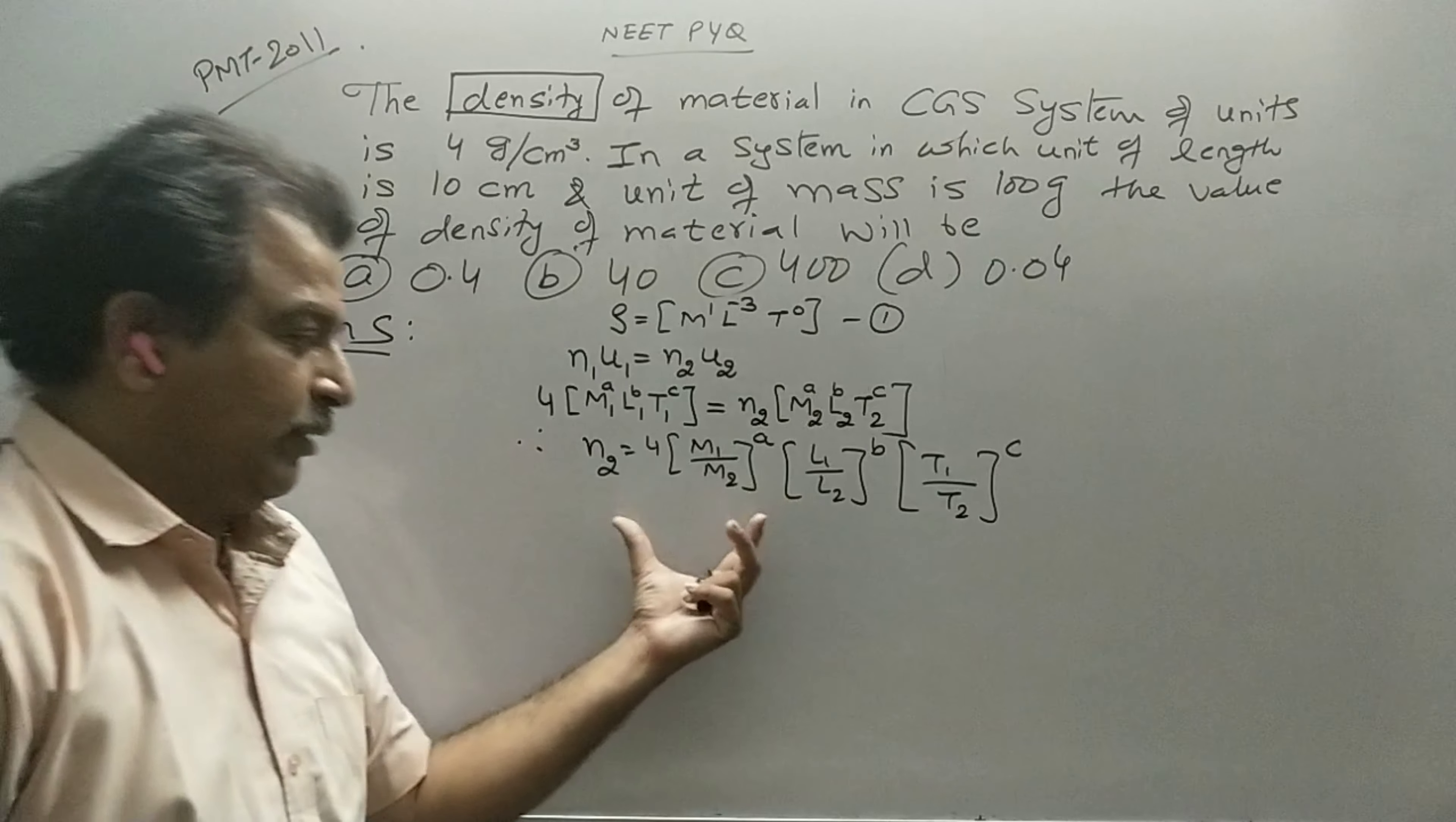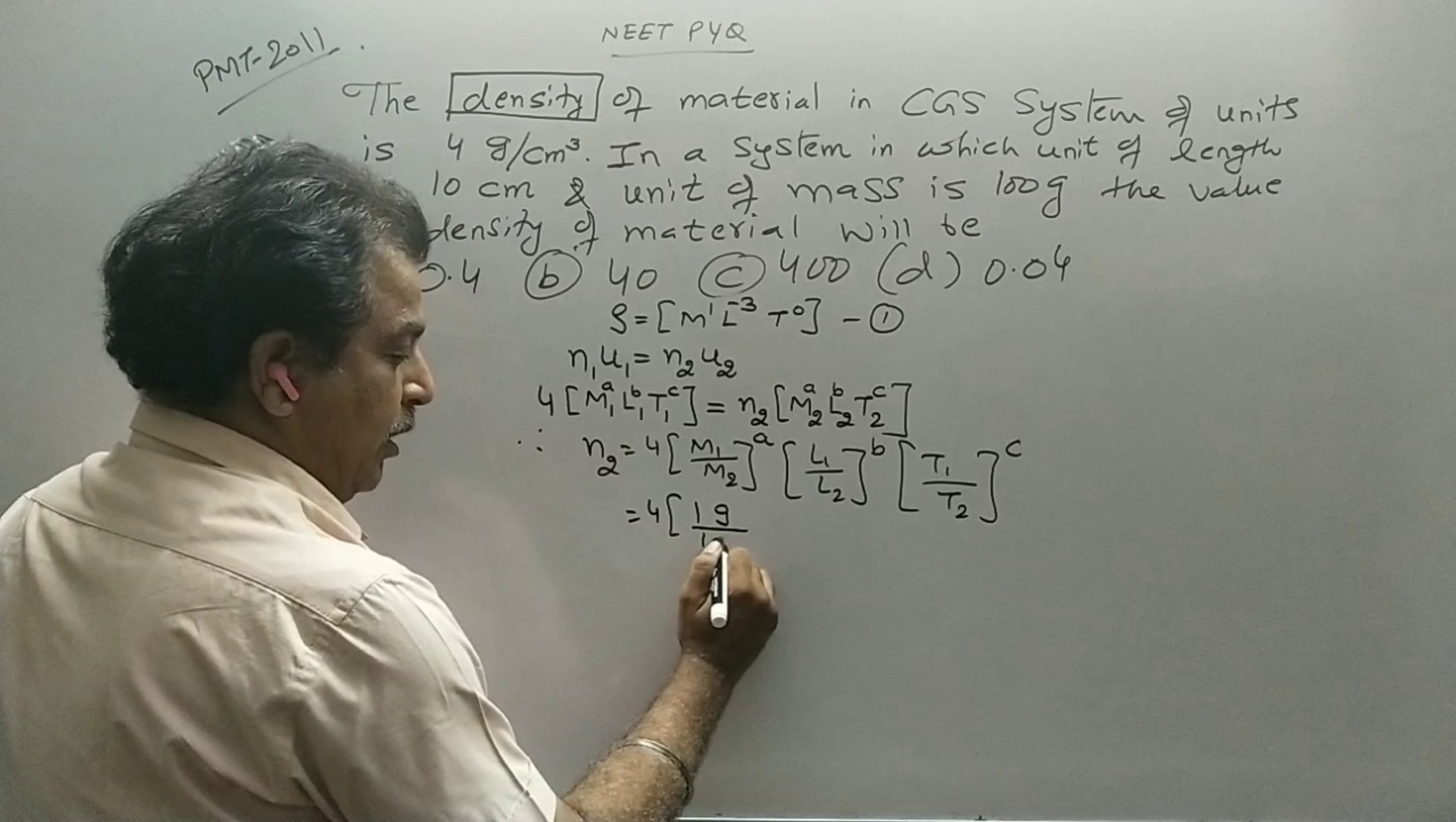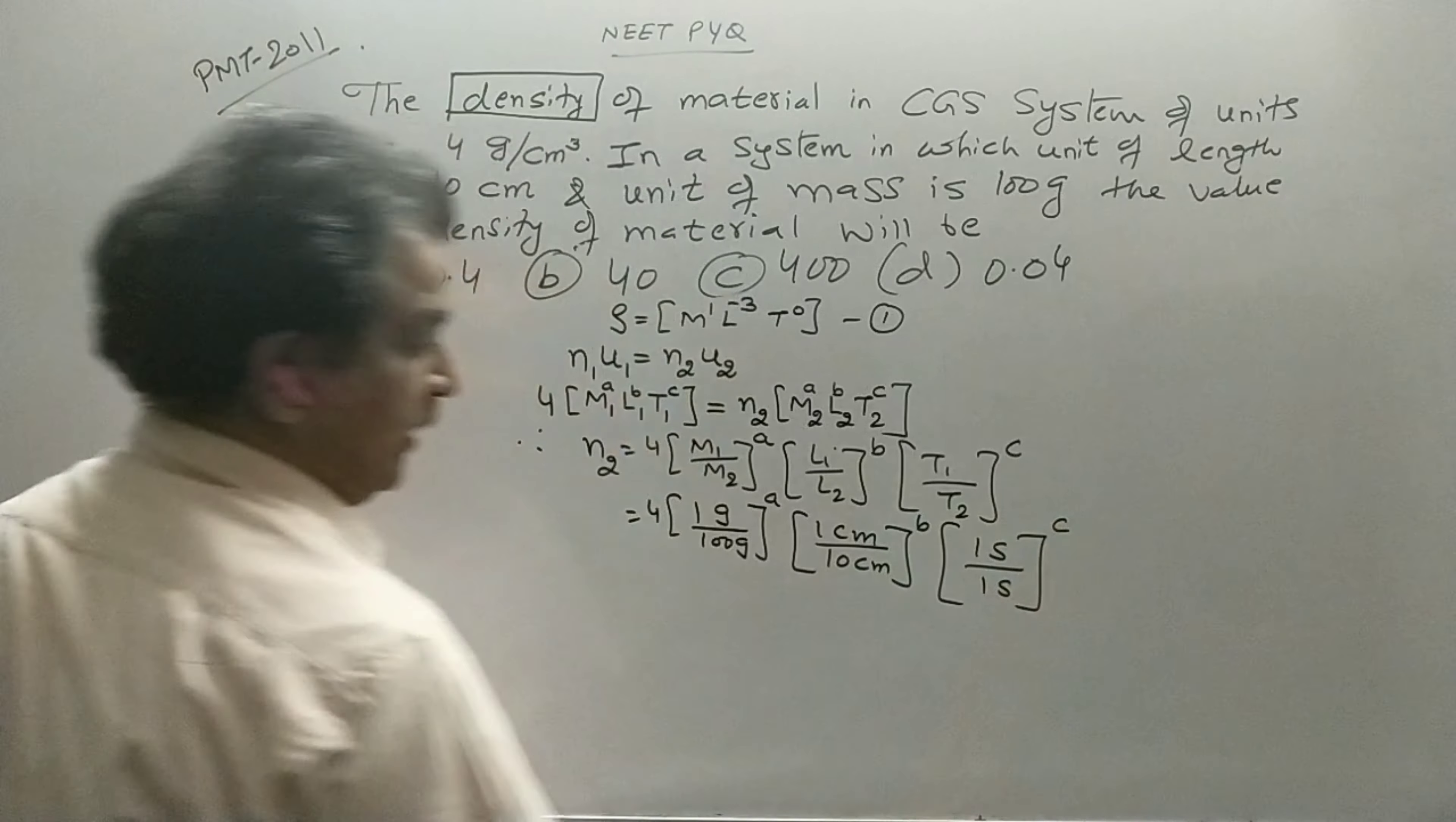You can directly start with this also. New numerical value is equal to the given numerical value. This is equal to 4, 1 gram in given system, mass in new system is 100 gram, dimension A. Old system, given system CGS, 1 centimeter, new system 10 centimeter power B. Time 1 second, 1 second, dimension C.